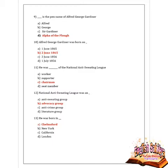Next question: AG Gardiner was the what of the National Anti-Sweating League? Given options are worker, supporter, chairman, and seat member. Option C is correct — chairman. Next question: what was the National Anti-Sweating League? Options are anti-sweating group, advocacy group, anti-crime group, and literature group. Option B is correct — it was an advocacy group.